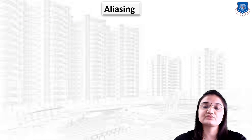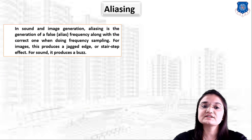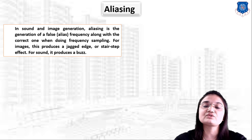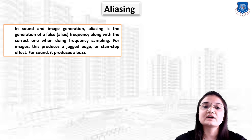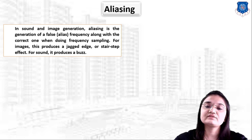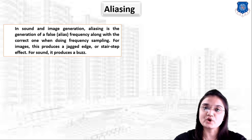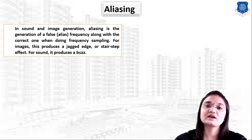Aliasing is the generation of a false frequency along with the correct one when doing frequency sampling. For images this produces a jagged edge or stair-step effect, and for sound it produces a buzz.